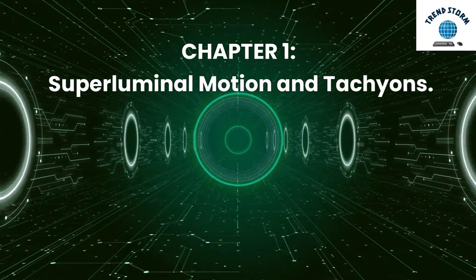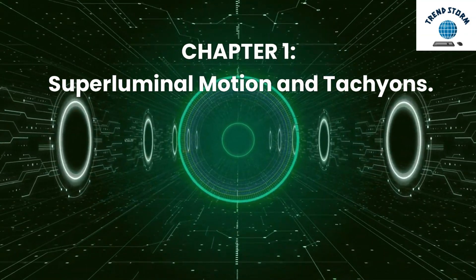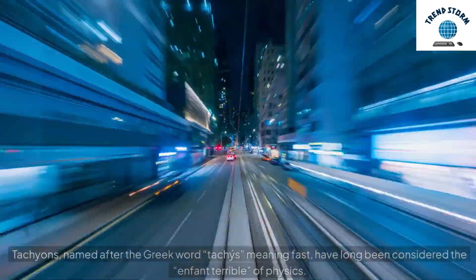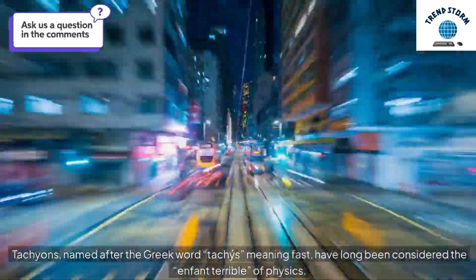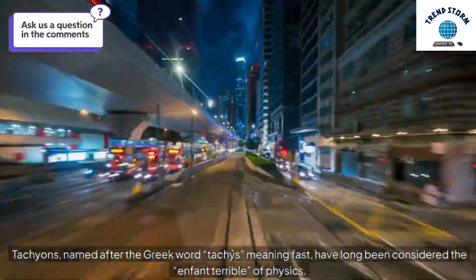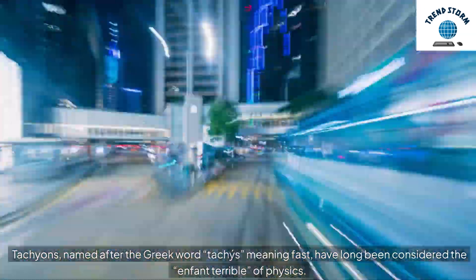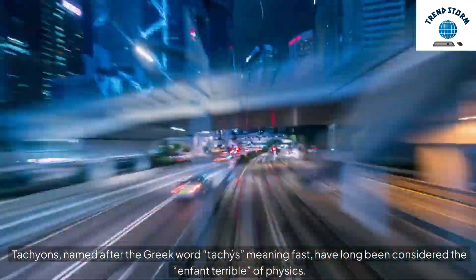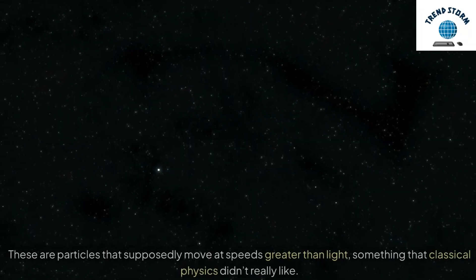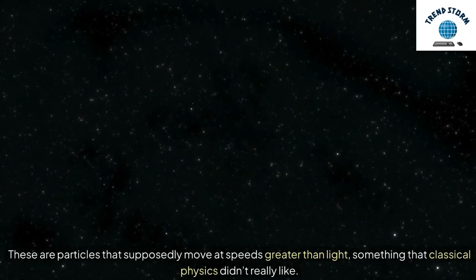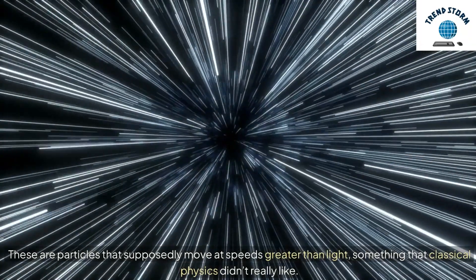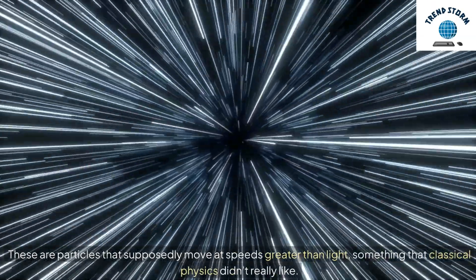Chapter 1: Superluminal Motion and Tachyons. Tachyons, named after the Greek word tachys meaning fast, have long been considered the enfant terrible of physics. These are particles that supposedly move at speeds greater than light, something that classical physics didn't really like.